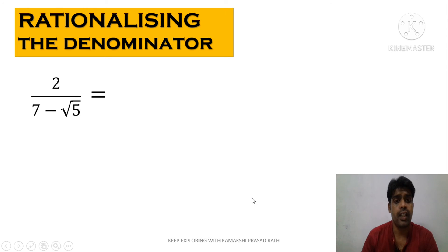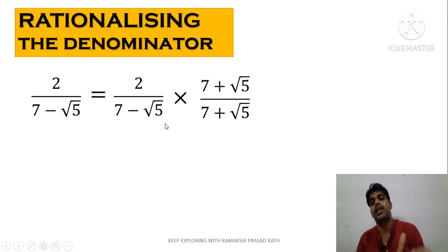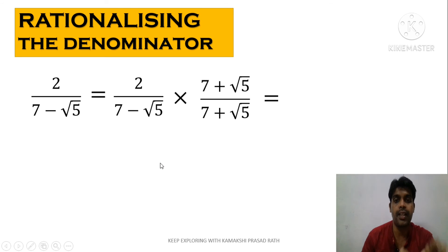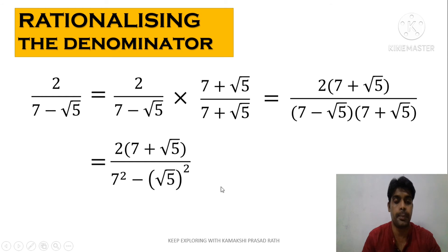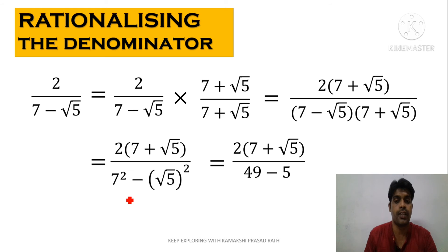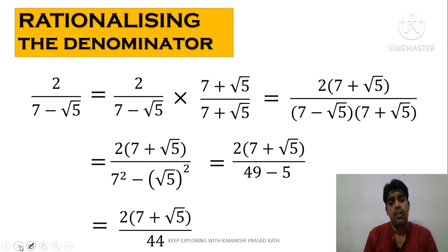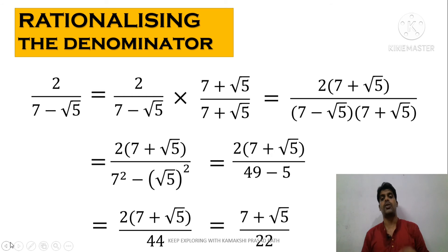Now the denominator is in the form a minus b: 7 minus root 5. So the rationalizing factor will be a plus b, which is 7 plus root 5. We multiply: numerator 2 times 7 plus root 5, and denominator 7 minus root 5 times 7 plus root 5 gives a squared minus b squared — 7 squared is 49 and root 5 squared is 5, so 49 minus 5 gives 44. Then 2 and 44 cancel, giving the final answer 7 plus root 5 by 22.